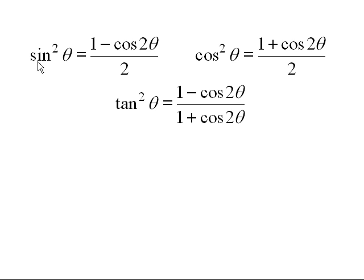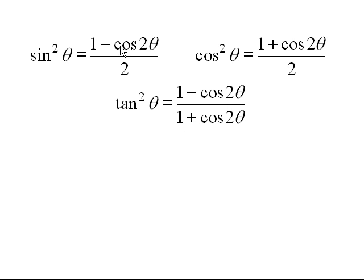By the quotient identity, tangent theta equals sine theta divided by cosine theta, so tangent squared theta equals sine squared theta divided by cosine squared theta. That's the sine squared formula over the cosine squared formula; the two's cancel, giving tangent squared theta equals one minus cosine two theta over one plus cosine two theta.